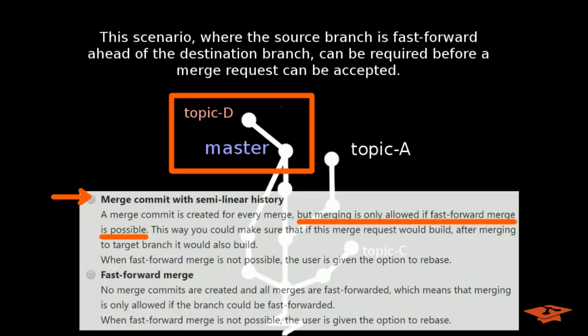That's actually the second option in these merge method options. So you can see merge commit with semi-linear history: a merge commit is created for every merge, but merging is only allowed if fast forward merge is possible. This way you could make sure that if this merge request would build after merging to the target branch, it would also build.